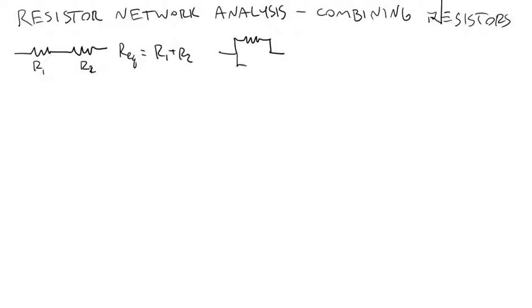And if you have two resistors in parallel, R1 and R2, then the equivalent resistance, one over the equivalent resistance, they add inversely, is one over R1 plus one over R2.